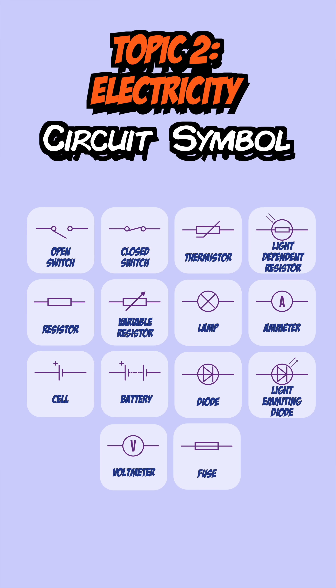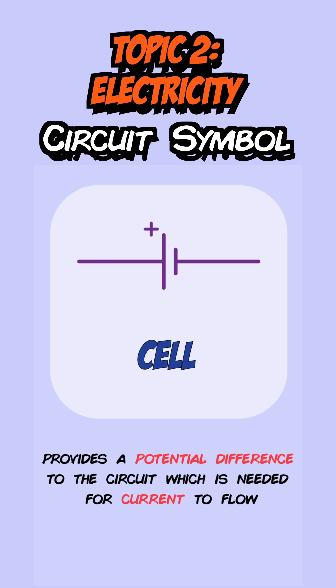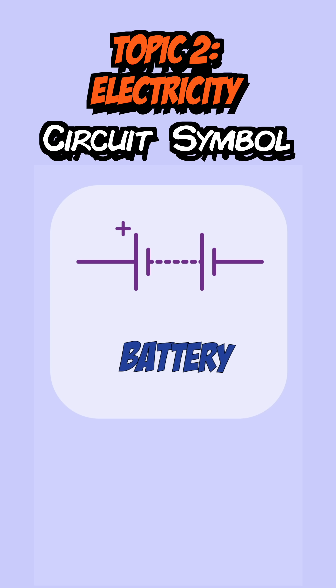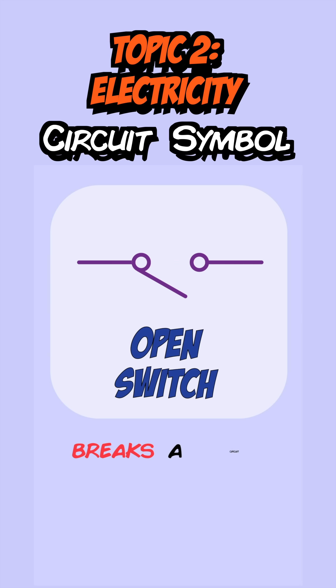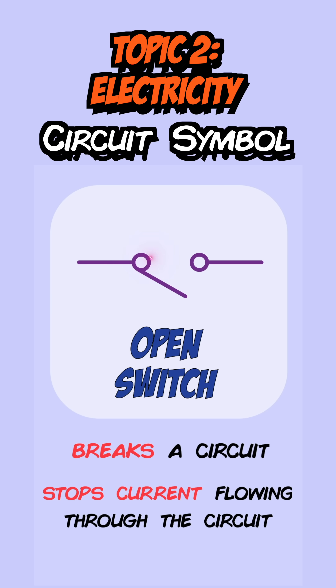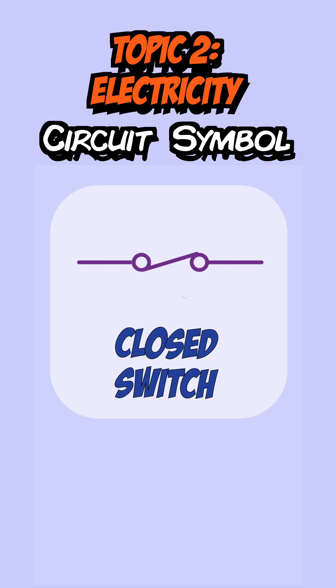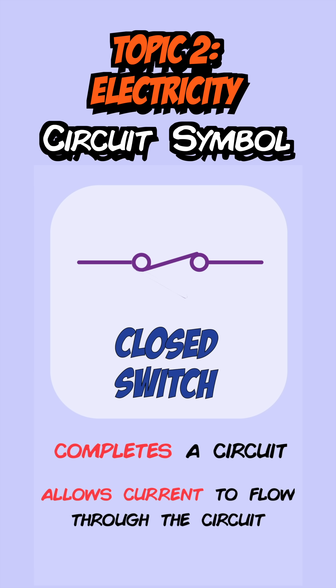The next topic is electricity, and here are every single circuit symbol you need to know. The first is for a cell, which is used to provide a potential difference to the circuit, needed for a current to flow. Next, we have a battery, which is just a combination of cells and has the same function. A switch is used to break and complete a circuit — when it's open, current can't flow, but when it's closed, the circuit is complete and current can flow.